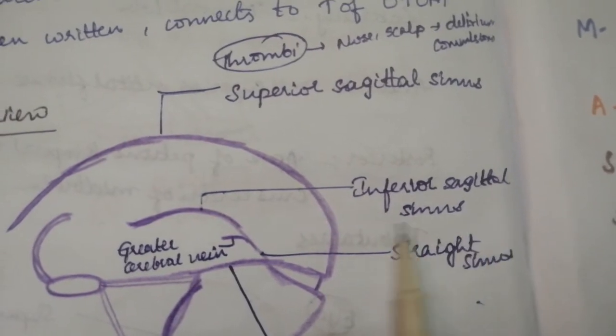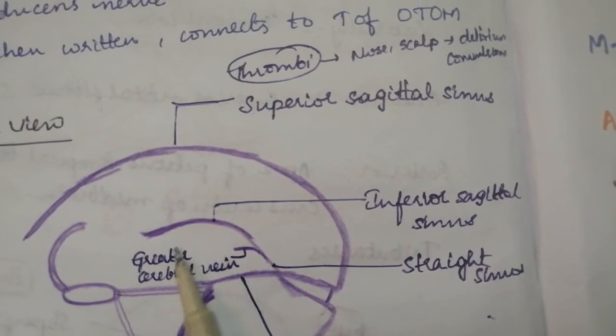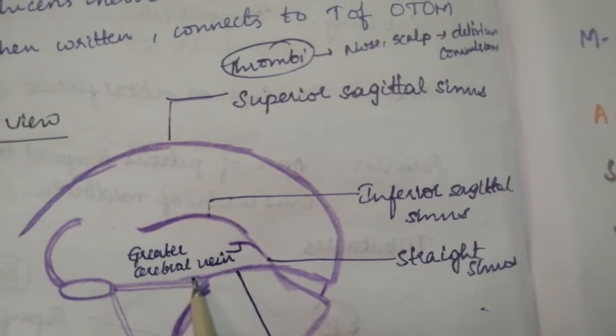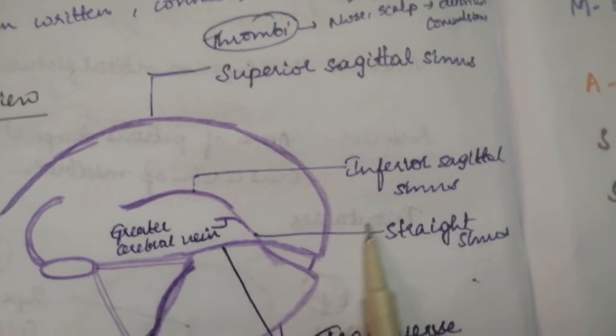And your inferior sagittal sinus gets connected to the lower of your greater cerebral vein and it connects to the straight sinus.